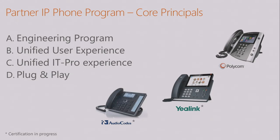The engineering program is essentially a specification document we share with partners, listing features that are mandatory and optional features partners can pick based on their market segments. What works in Germany doesn't work in North America; what works in Asia doesn't work in Europe. Those specifications include how the experience should be, how to develop it, and a test plan. Once the phone passes that, it goes into a third-party lab — not Microsoft or the partner — which performs all tests and certifies the phone for that specific version.